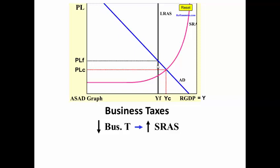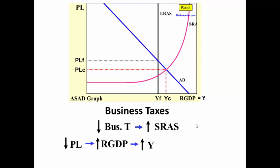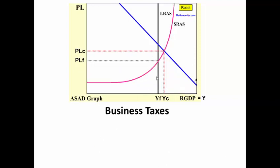As the short-run aggregate supply curve shifts to the right, we go from this point on the long-run aggregate supply curve to this new point. This lowers the price level, as you can see. This increases real GDP, which will also increase national income, since real GDP equals national income.